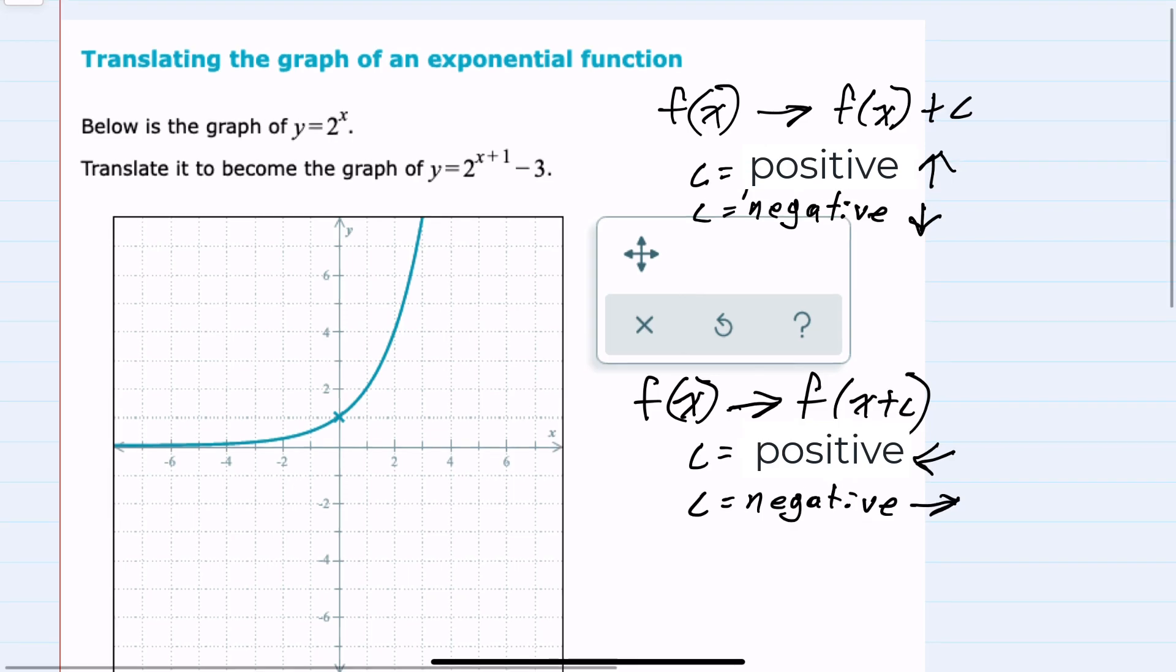For this example, we have both. We have the addition or subtraction to the end, just like in the top here where c is negative, this is going to move the graph down 3 units. So if it was only the subtract 3, then this would move it down 3 units, and that would be the only change.